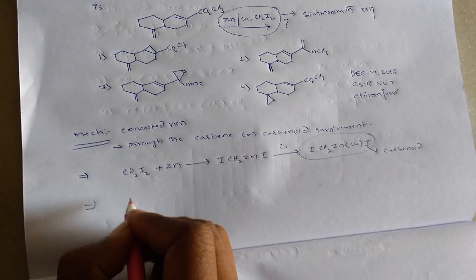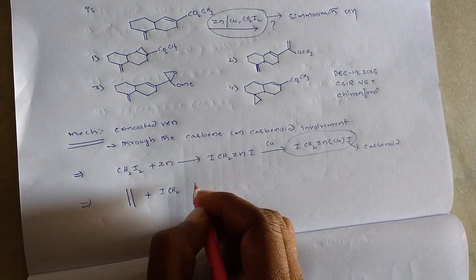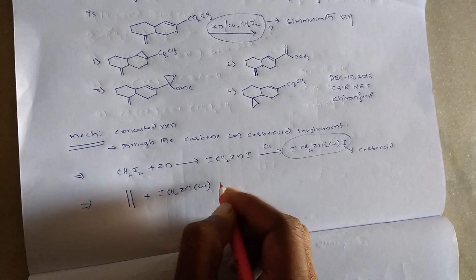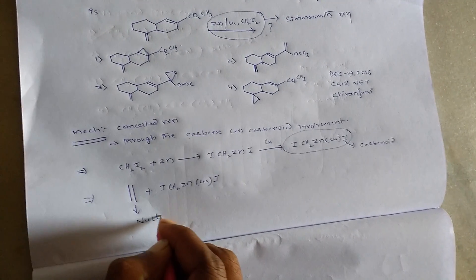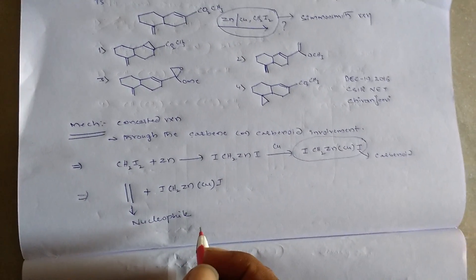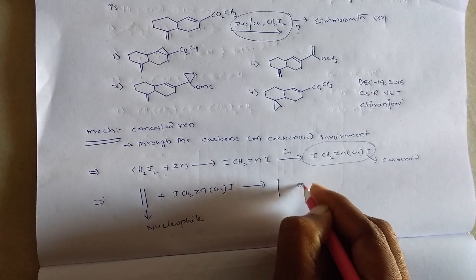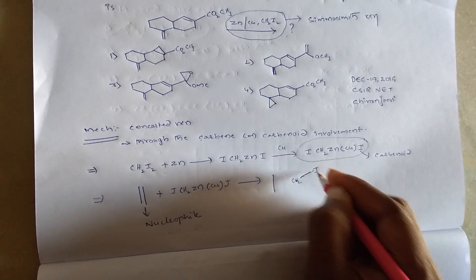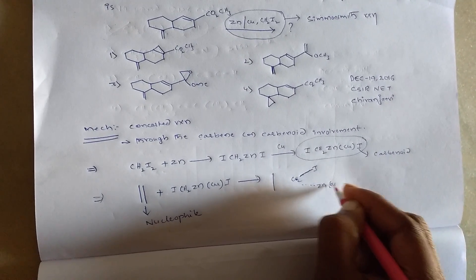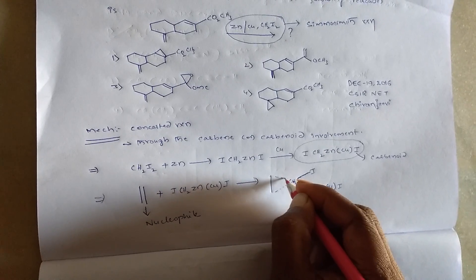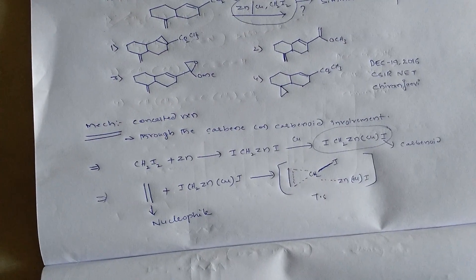Then the alkene reacts with the zinc-copper activated carbenoid. In this reaction, the alkene acts as a nucleophile. This is the transition state involved in the cyclopropanation of the Simmons-Smith reaction.